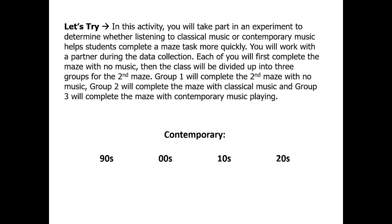What you'll be doing in class after these notes is taking part in an experiment to determine whether listening to classical or contemporary music helps students complete a maze task more quickly. You're going to work with a partner to collect your data. Each of you will first complete the maze with no music. Then the class will be divided into three groups for your second maze: group one with no music, group two with classical music, and group three with contemporary music. There are songs from the 90s, 2000s, 2010s, and 2020s, and you can vote as a class on which to use.